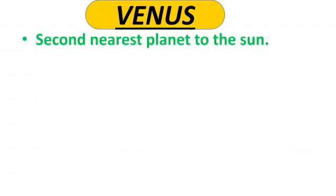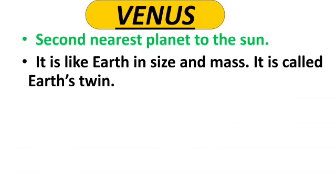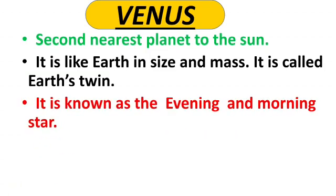Venus is the second nearest planet to the sun. It is similar to Earth in size and mass, so it is also called Earth's twin. It is known as the evening and morning star — can you tell me why?